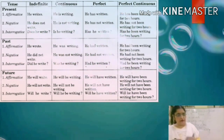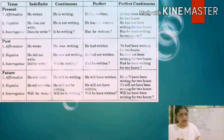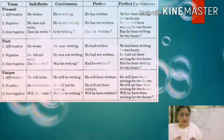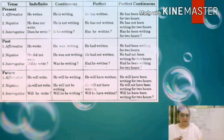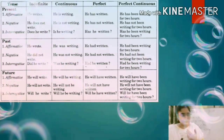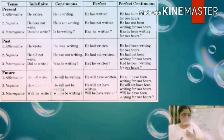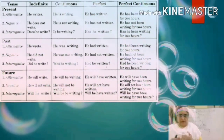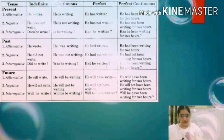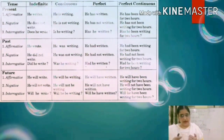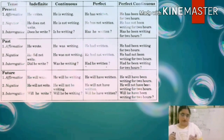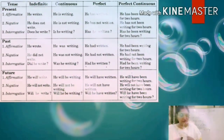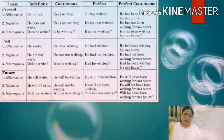In interrogative past tense, we use 'did' — so 'did he write?' Because it is past tense, we use 'did' and 'was.' For past perfect interrogative, 'had he written?' And for past perfect continuous, 'had he been writing for two hours?'